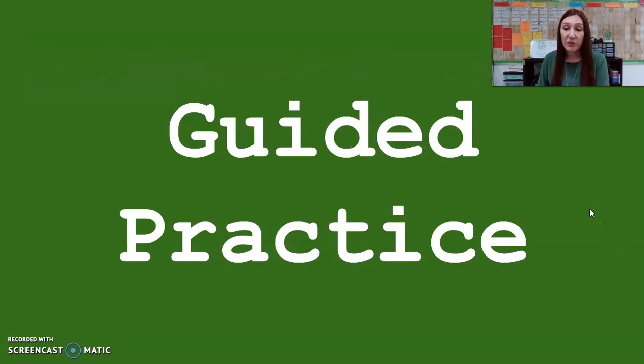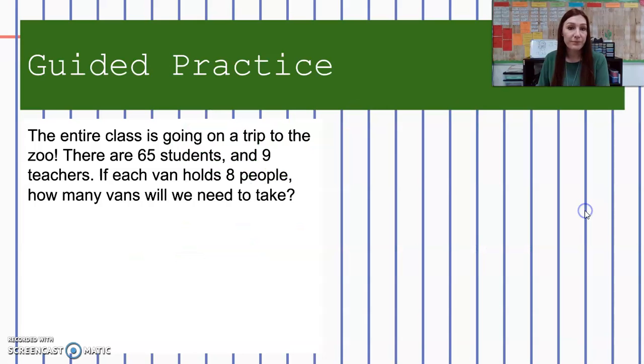Let's look at some problems together and see if we can interpret our remainders. The entire class is going on a trip to the zoo. There are 65 students and nine teachers. If each van holds eight people, how many vans will we need to take? I have 65 students and nine teachers going on the trip, so I need to find first my total number of people going on the trip. Five plus nine is 14, carry the one. One plus six is seven. So I have a total of 74 people going on this trip. And now I need to break those 74 people up into groups of eight, because one van can only hold eight people. So I'm going to divide 74 by eight.